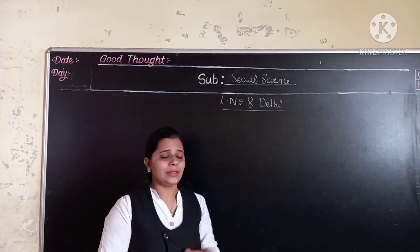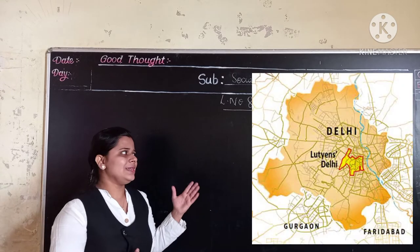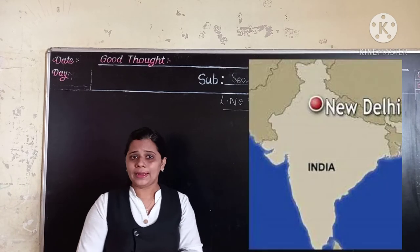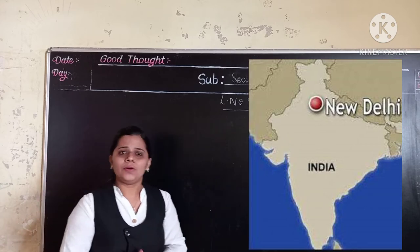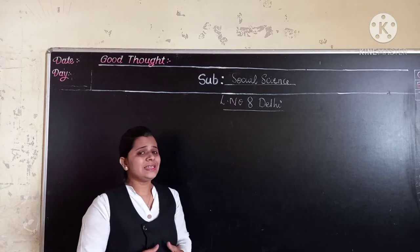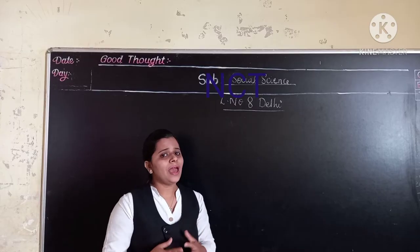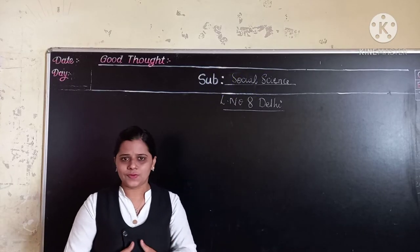So students, the Delhi which is planned by Edward Luton — that is New Delhi. And now this New Delhi is our capital of India. In official terms, it is called National Capital Territory of Delhi, in short NCT. So this we have discussed in the last video.